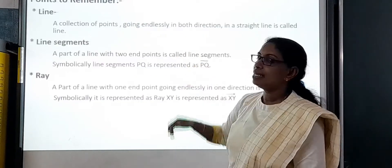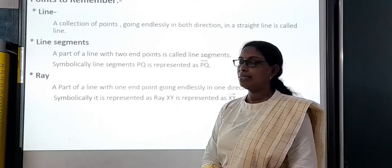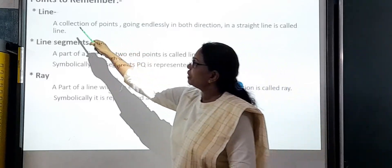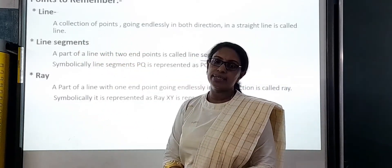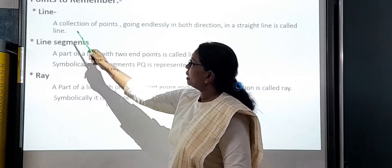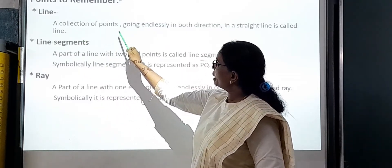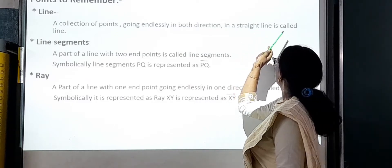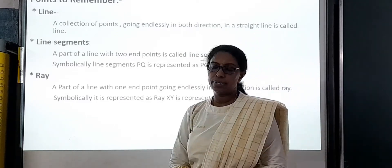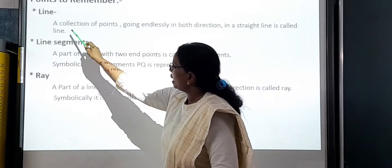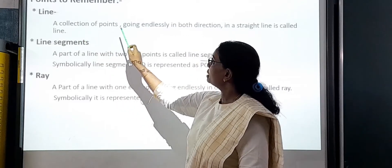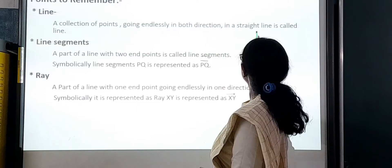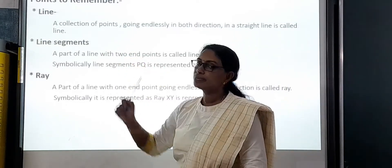Already we have read about lines and line segments. Now, what is a line? A collection of points going endlessly in both directions in a straight line is called a line.